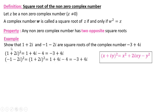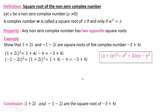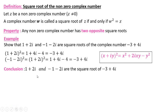Then the square of this complex number equals minus three plus four i. Consequently, this complex number is a square root of minus three plus four i. In a similar way, the square of the other complex number will also be minus three plus four i. Finally, we conclude that these two complex numbers are square roots of minus three plus four i.